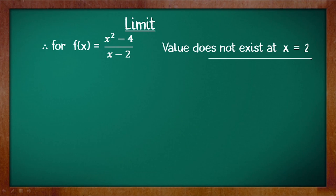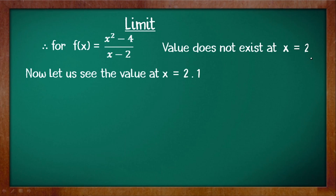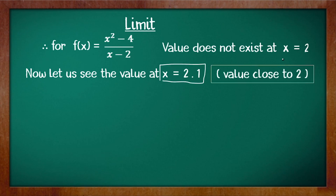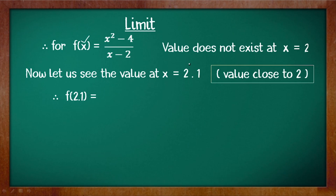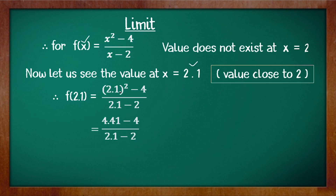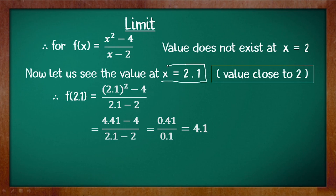So what we will do is look at the value at x = 2.1, a value that is close to 2. We know the function is undefined at exactly 2, but let's see what happens when we take a value close to 2. Replacing x with 2.1: (2.1² - 4) / (2.1 - 2) = (4.41 - 4) / 0.1 = 0.41 / 0.1 = 4.1. So f(2.1) = 4.1.